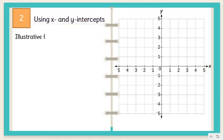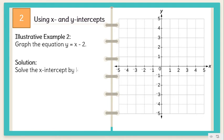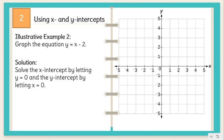Let's have another example. Graph the equation Y is equal to X minus 2. Again, we're going to let Y equal 0 to get the X intercept and let X equal 0 to get the Y intercept. We're going to start with X is equal to 0.